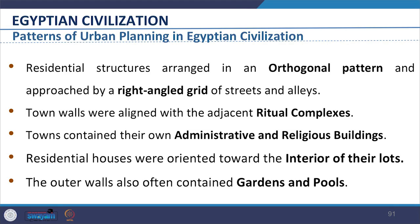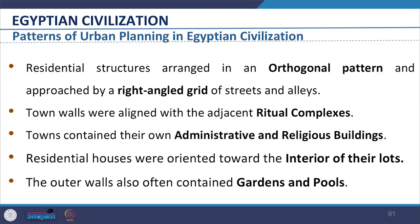Looking at the pattern of urban planning in Egyptian civilization, towns comprised blocks of residential structures arranged in an orthogonal pattern and approached by right-angle grids of streets and alleys. This also facilitated the army structure and ease of movement from one area to another. Town walls were aligned with adjacent ritual complexes. Towns contained their own administrative and religious buildings. Residential houses were oriented towards the interior of their lots and included large reception and living rooms, designated bathrooms, sleeping quarters, storage areas, food preparation, and sometimes residential craft areas. The outer walls often contained gardens and pools. We see that residential areas were becoming complex with living spaces, sanitation facilities, storage, craft areas, and integrated spaces. We evolved in understanding of organized form and sanitation systems in this period — something we are still dealing with today.